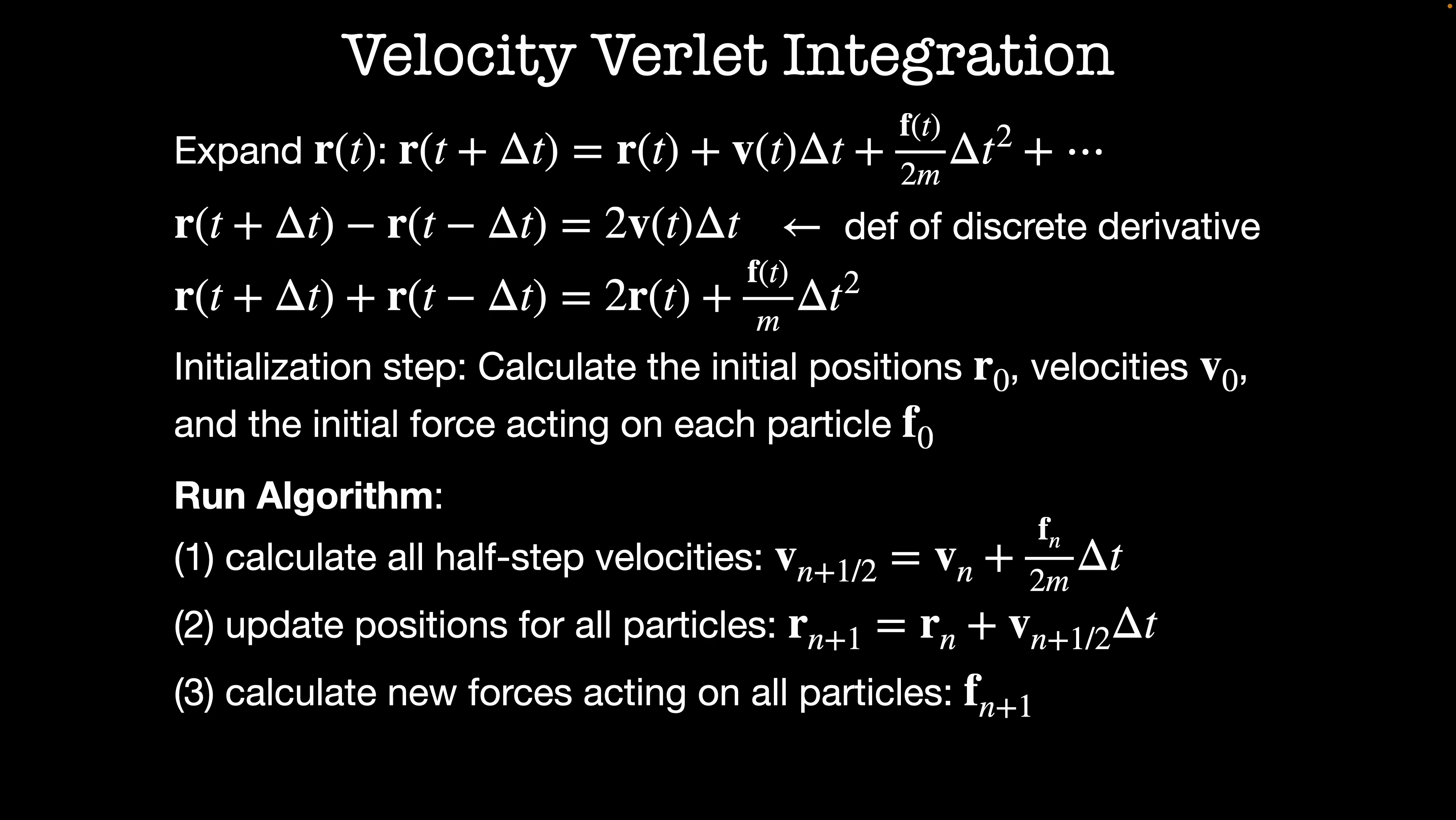Step three, we're going to calculate the forces acting on all of the particles from the new positions we just worked out in step two. And lastly, we're going to update all of the velocities at the end of the time step. And I'll do this exactly the way I calculated the half step velocity. So my velocity at time step n+1 is equal to my velocity at time step n+1/2 plus f_n over m times delta t over two.